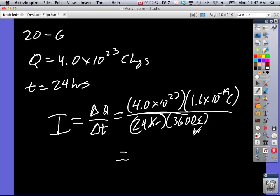Now, this and this becomes times 10 to the 4th. This is 3,600, so that goes away.